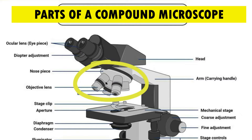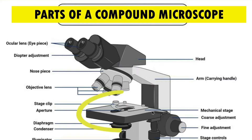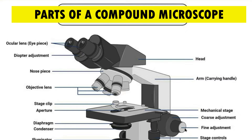These objective lenses are of different magnifying powers and they help in magnifying the image of the object. This is the stage on which stage clips are there, which help in fixing the slide on the stage properly. Pay attention to these knobs — coarse adjustment and fine adjustment. They help in focusing. By simply rotating these, we can get a clear image.